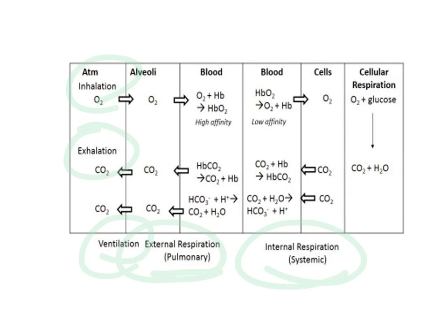Looking at the transport of gases, we have to look at the exchange first. In pulmonary respiration, oxygen goes from the alveoli into the blood. When it gets to the cells, it goes from the blood to the cells — because of cellular respiration, where glucose is metabolized through aerobic respiration in the presence of oxygen, producing CO2 and water. That CO2, as a metabolic byproduct, must be removed: it goes from the cells to the blood, then to the lungs, where CO2 goes from the blood into the alveoli and is exhaled.